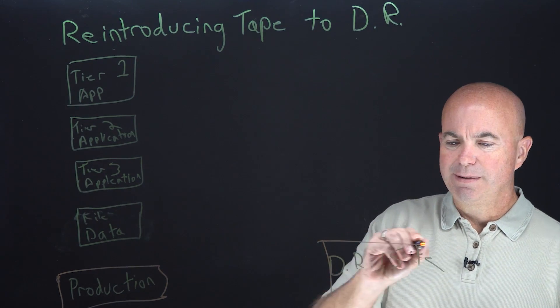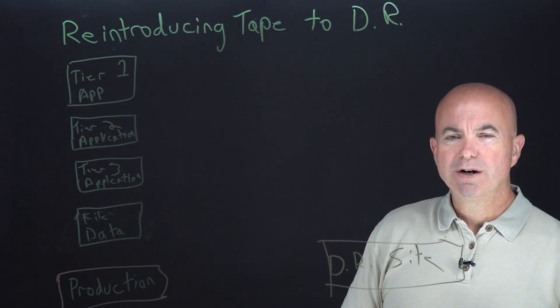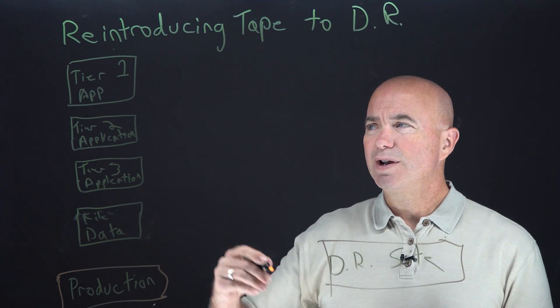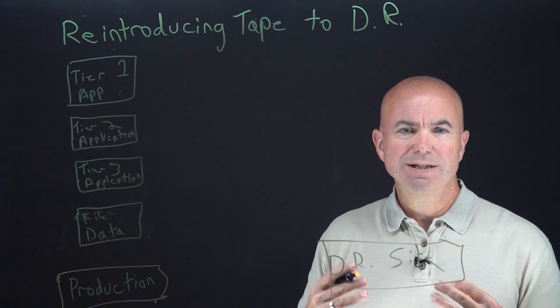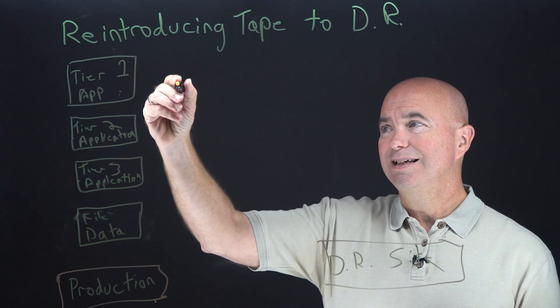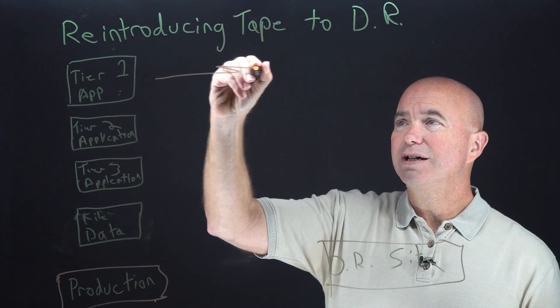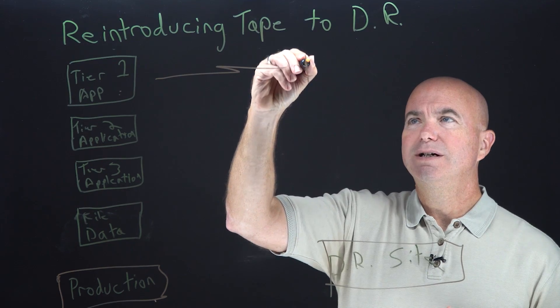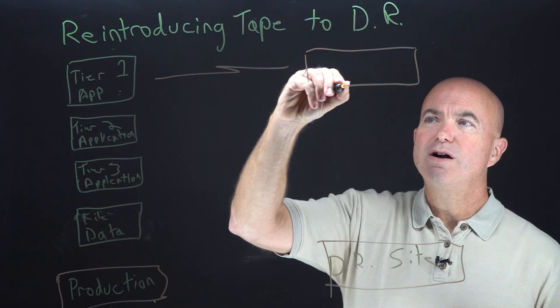And then I have a DR site right here, which is basically, at this point anyways, empty. So let's talk about how we would protect each one of these. Since tier one applications have to come up and running almost instantly, we're probably going to be using some sort of synchronous or asynchronous replication directly into the DR site.